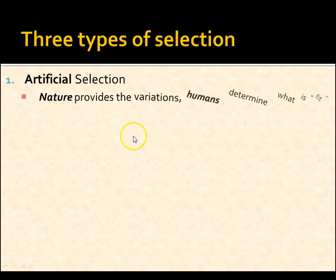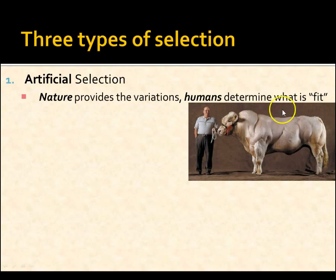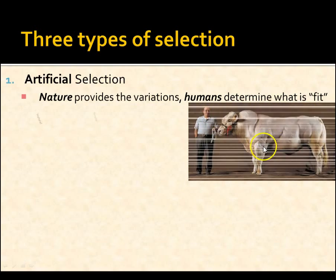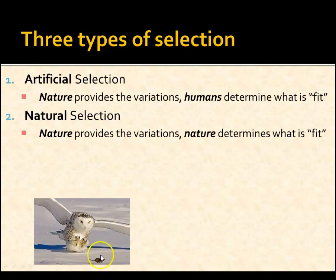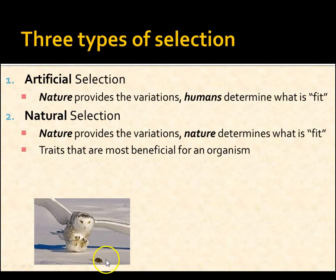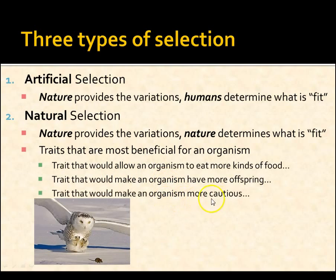We have three types of selection. Artificial selection is where nature gives you variations — through mutation, crossing over, sexual recombination — and humans say, 'That's fit, I want that.' This resulted in things like the Belgian blue cow, that over-muscled cow. Natural selection is where nature provides the variations and nature is the one who decides what's fit — like a well-camouflaged owl or a fast mouse. Those are traits most beneficial for an organism in the long term, like eating more kinds of food, having more offspring, or being more cautious in a scary environment.